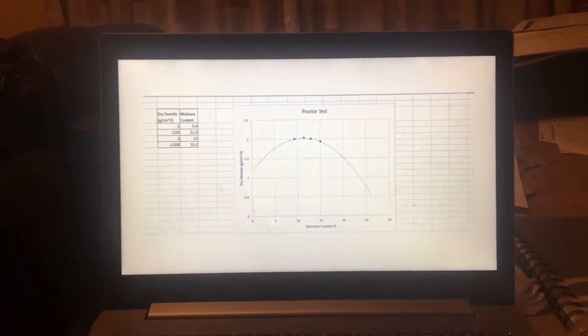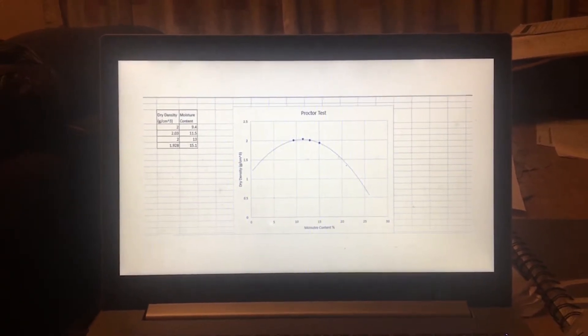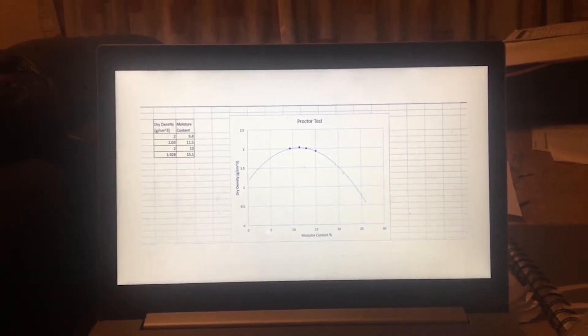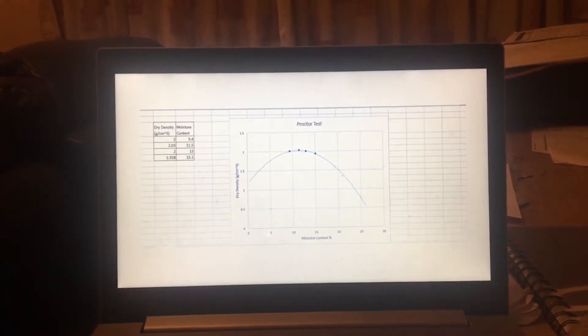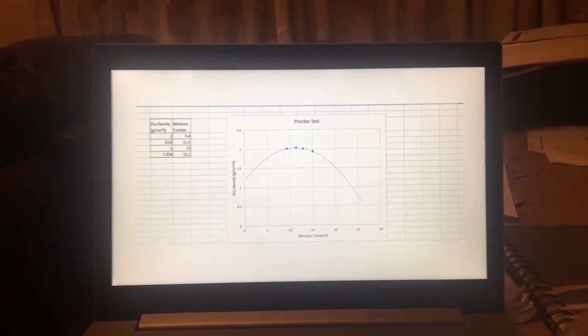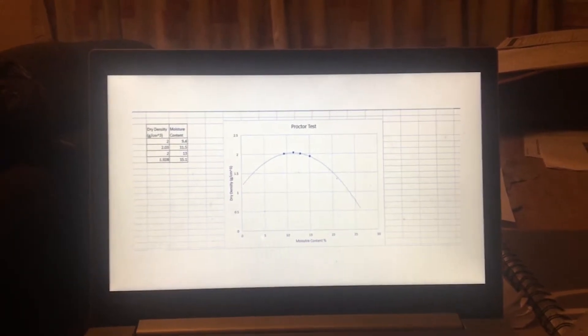The proctor test is used to calculate the max dry density of a soil in relation to its moisture content. This helps to allow contractors to specify the soil compaction rate of the soil. We can see from our results that the max dry density was about 2.05g per cm³ at a moisture content of 12%.